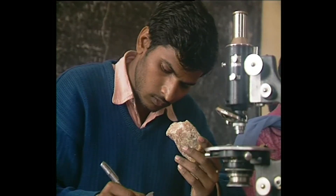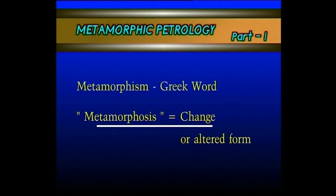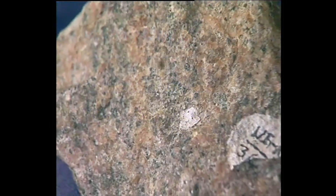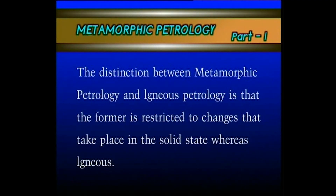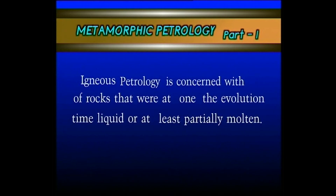Now let us see what the word metamorphism means and from where it is derived. The word metamorphism comes from the Greek word metamorphosis meaning to change or alter form. Metamorphic petrology is concerned with transformations that take place in rock. The distinction between metamorphic petrology and igneous petrology is that the former is restricted to changes that take place in the solid state, whereas igneous petrology is concerned with the evolution of rocks that were at one time liquid or at least partially molten.